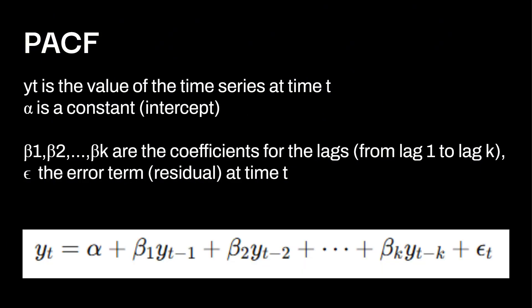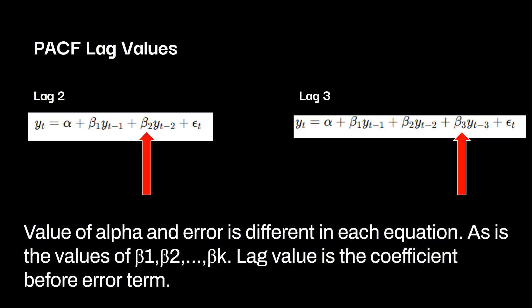Here's the formula. y_t is the value of the time series at time t, alpha is a constant which is the intercept, beta_1, beta_2, all the way through beta_k are the coefficients for the lags from lag one to lag k. Then we have the error term residual at time t. Here's the different lag values. We have lag two and also lag three. If you want to find the specific value, you would grab it when it's the last term, so that beta two or beta three. The value of the alpha and error is going to be different in each equation, as is the beta value. So beta two in lag two is not going to be the same as beta two in lag three. The same with that alpha value, as well as the error term.